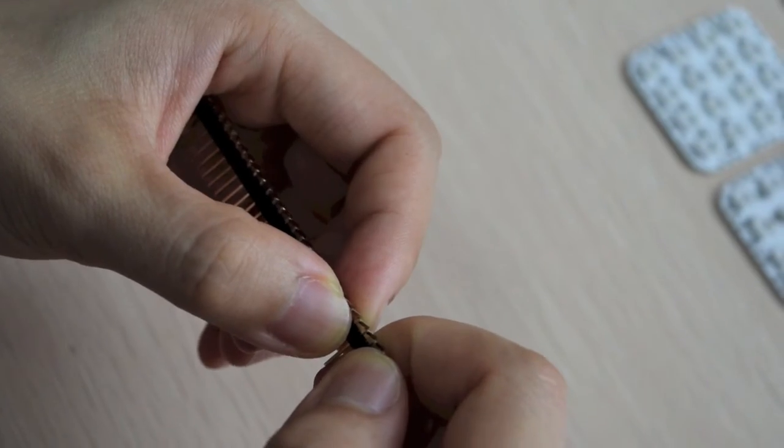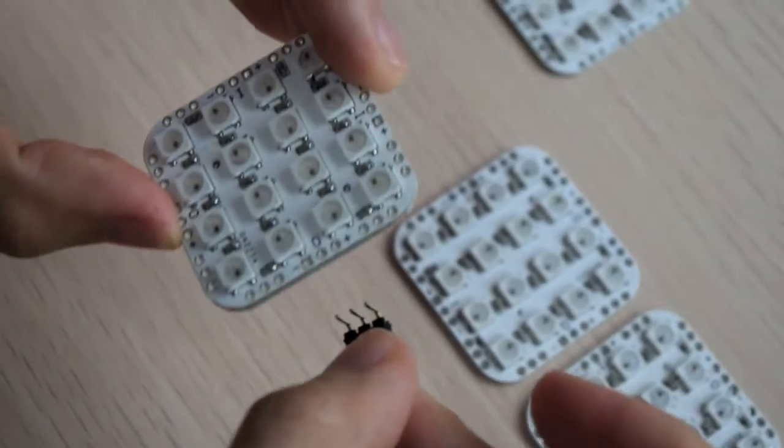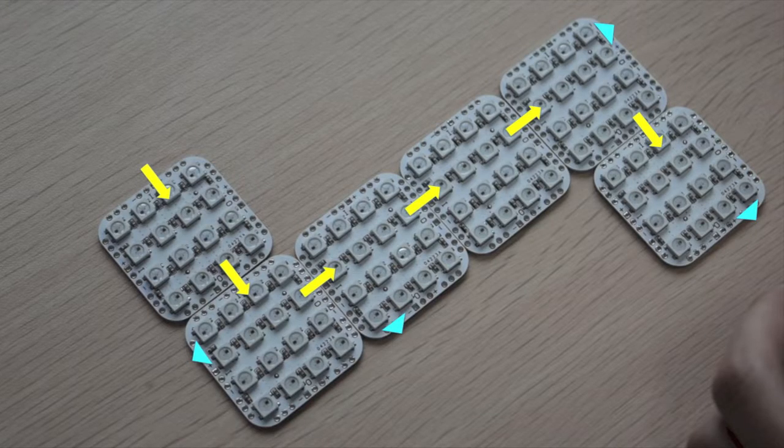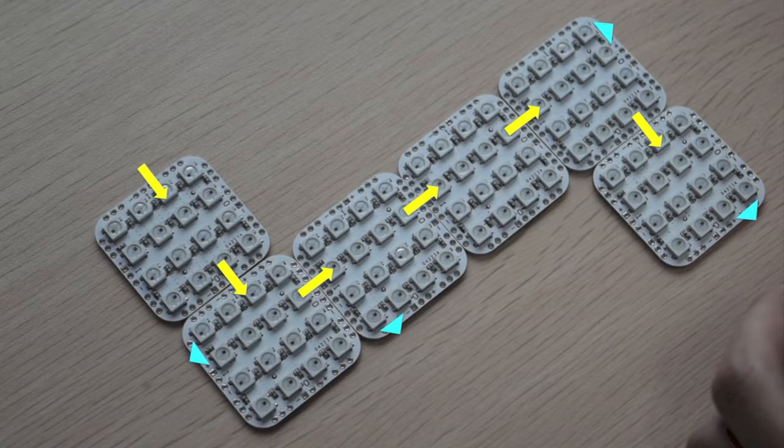Next, taking the right angle pin male header, use your soldering iron and wire to solder the header into the correct set of holes based on the following diagram.